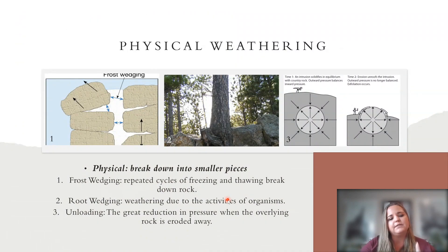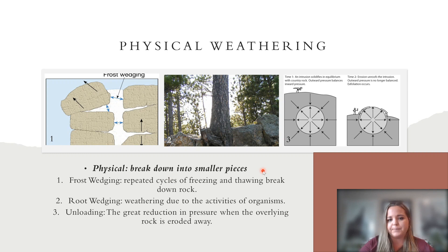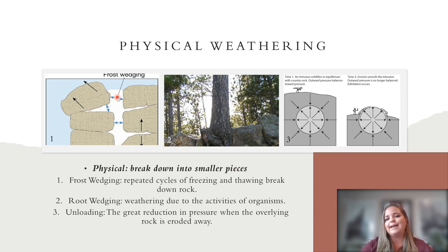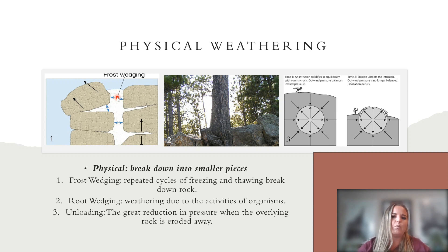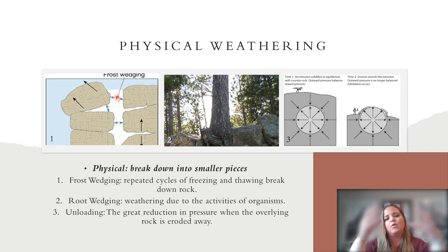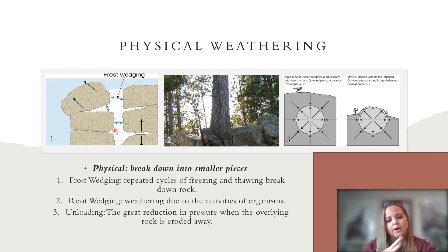Physical weathering and chemical weathering are the two weathering processes. Physical weathering is the breakdown into smaller and smaller pieces without changing the rock's composition. One example is frost wedging — when cracks in rocks allow water to intrude, and in areas where water freezes and thaws rapidly, the water in the cracks freezes, expands, and breaks the rock apart. Another is root wedging — a tree or plant growing in a rock seeks nutrients in the cracks and eventually breaks the rock apart.